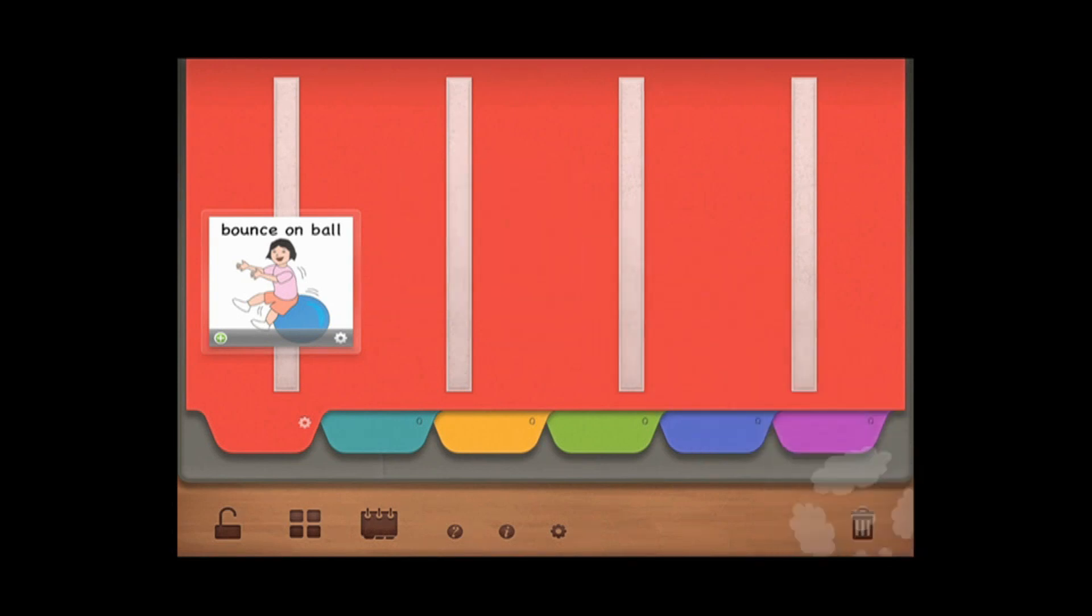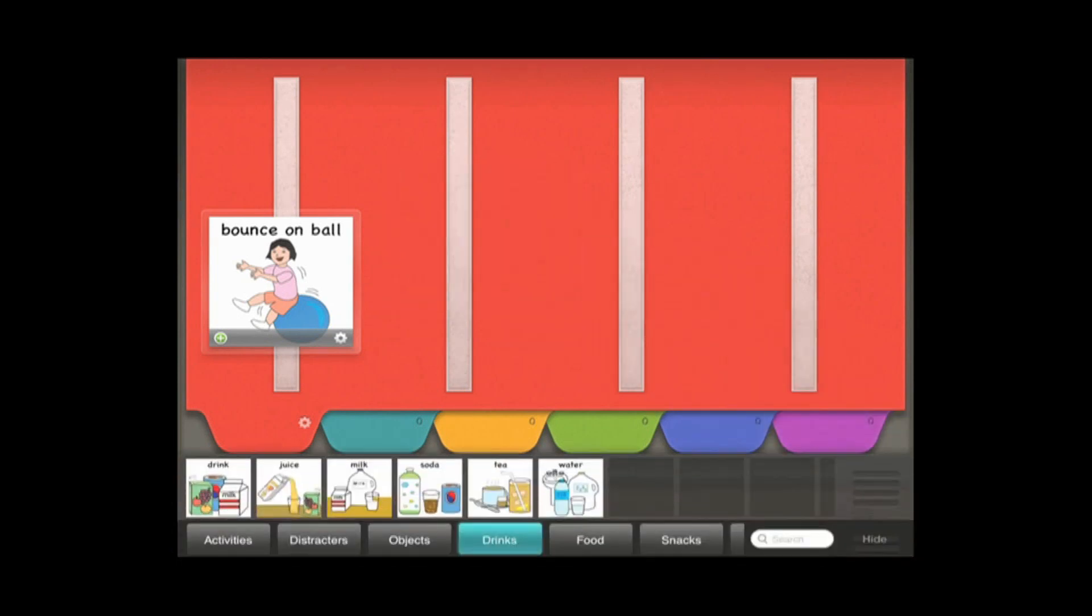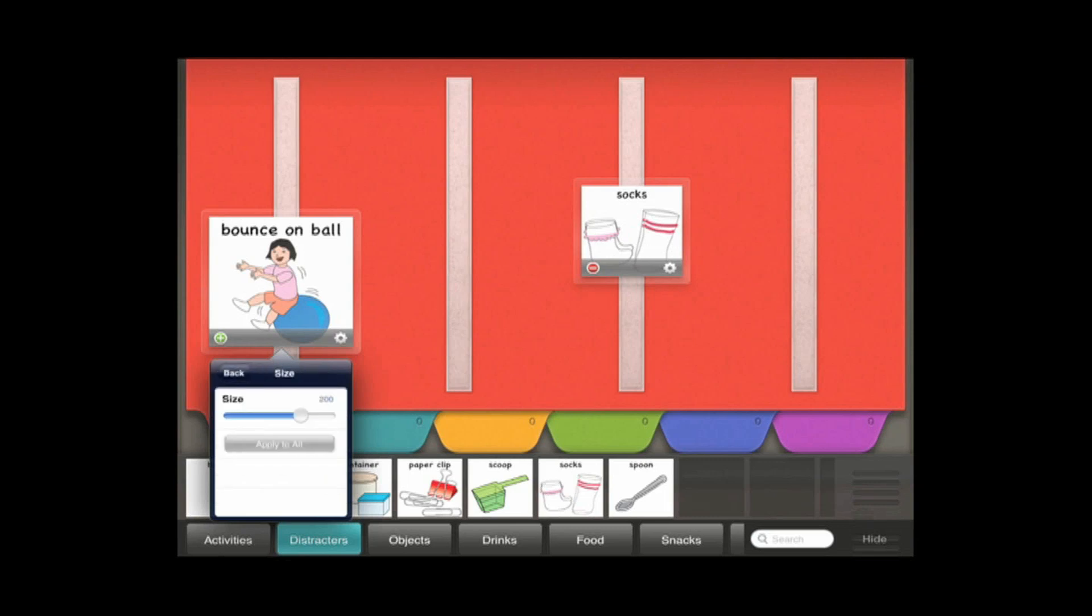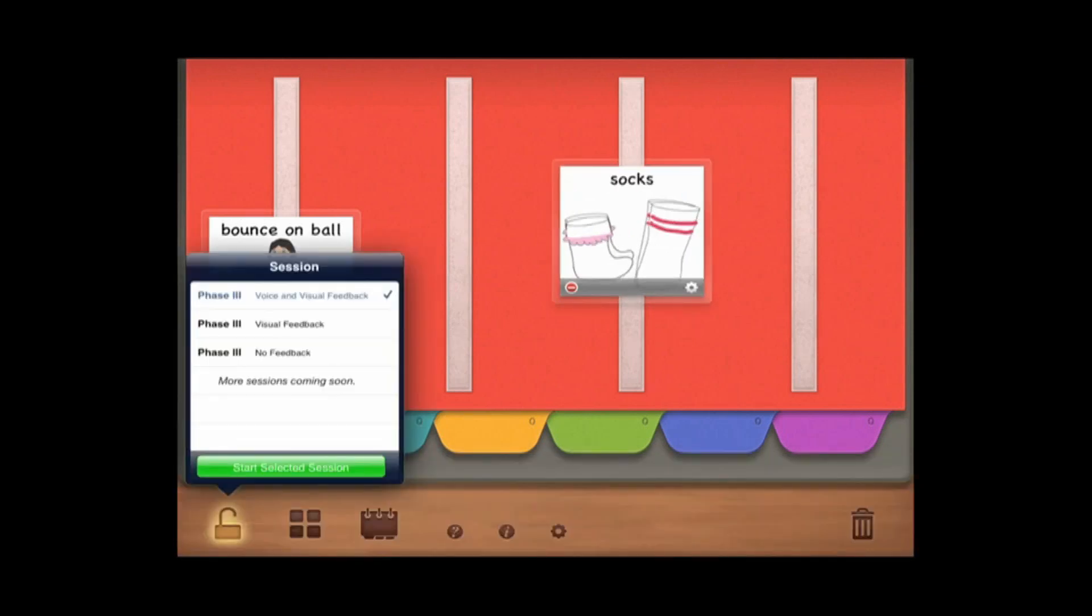Any picture taken from the Distractor tab will be automatically set to minus to indicate that it is the non-preferred item. Once you have set up your lesson, tap the lock icon. Choose the type of feedback your student will receive for each picture touch. Tap Start Selected Session and the PECS page is ready to go.